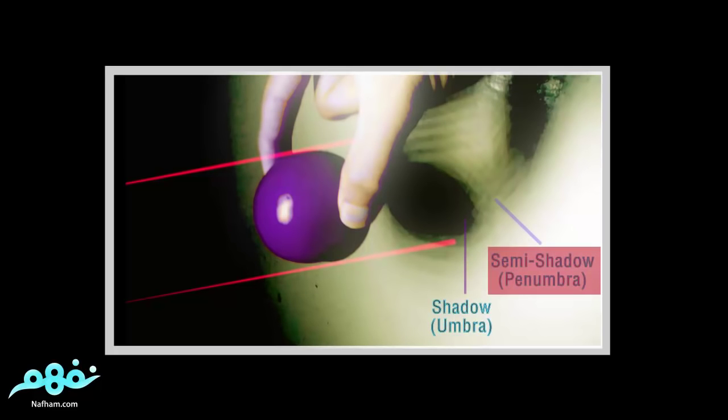But if we use a bigger light source, we will obtain and see two regions of shadow: a semi-shadow which is called the penumbra, and a real dark shadow which is called the umbra.